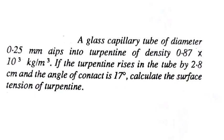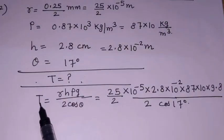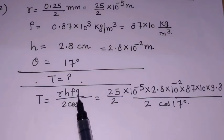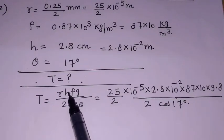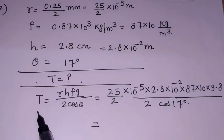Second question: a glass capillary tube is given with radius 0.25 mm / 2, density ρ is given, extra height h = 2.8 cm, and θ = 17°. We have to find the surface tension. The formula for surface tension is T = rρgh / 2cosθ — the same as the ascent formula, just rearranged. Put in all the values and calculate surface tension.